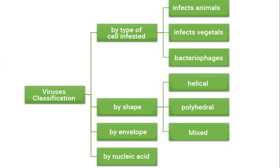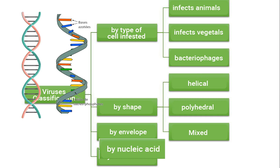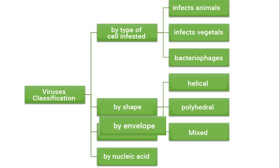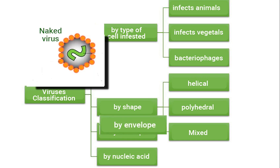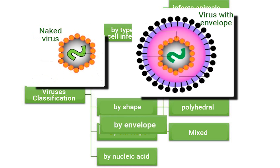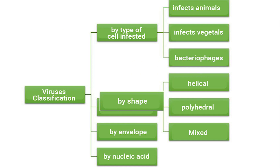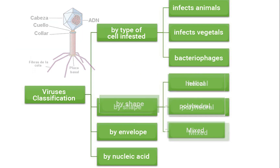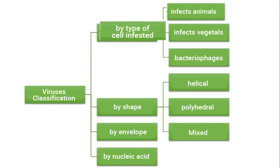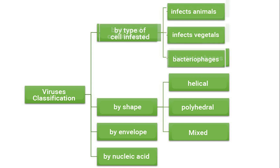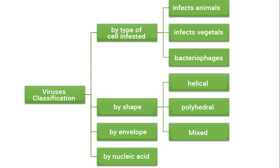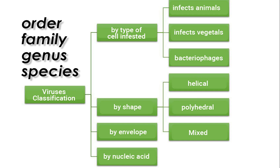The classification of viruses can be given according to various criteria. Depending on its type of nucleic acid — which can be DNA (deoxyribonucleic acid) or RNA (ribonucleic acid) — or its envelope: a naked virus has only nucleic acid and capsid, while an encapsulated virus also has an outer layer of lipids and glycoproteins. Depending on their morphology, they can be helical, polyhedral, or mixed. Depending on the cells they infect, they can be animal viruses, plant viruses, fungi viruses, bacteria viruses, or virophages. Like other living organisms, they are classified according to taxonomic criteria of order, family, genus, and species.